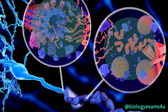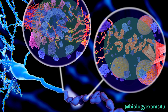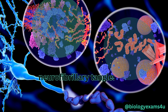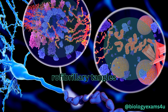Neurons cannot function properly without a healthy cytoskeleton. Also, like amyloid, tau can stick to itself to form tau oligomers, which can spread throughout the brain. These oligomers later form neurofibrillary tangles that gather inside of neurons, disrupting the communication network and causing them to die.